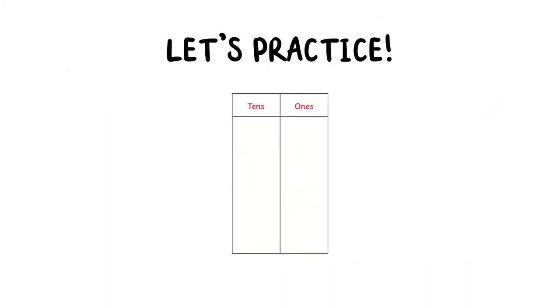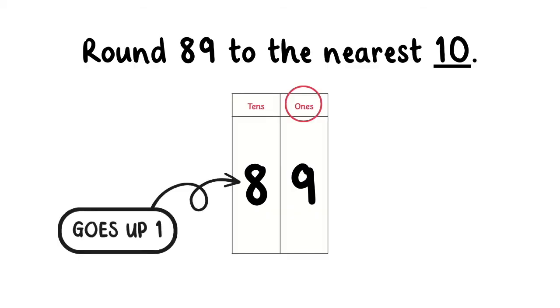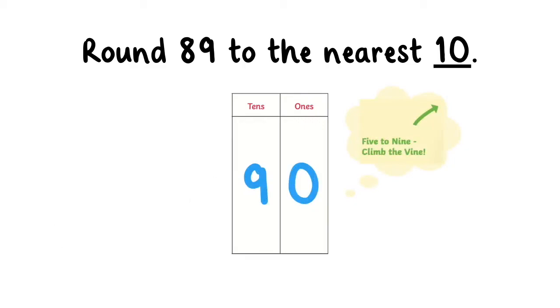Let's practice. Round 89 to the nearest tenth. Since the ones digit is nine, which is five or greater, we increase the tenths digit by one. Therefore, 89 rounded to the nearest tenth would be 90.